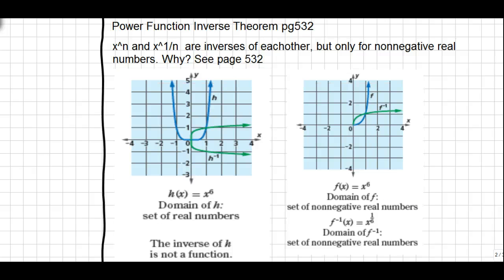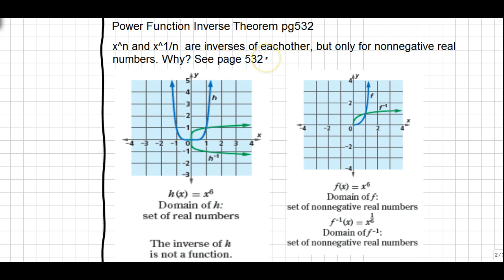One final item is the power function inverse theorem. When working with x to a power n and x to the inverse power 1/n, they are inverses of each other, but only for non-negative real numbers. Visually: if you have a parabolic power function with an even exponent and reflect it over y = x, the resulting inverse graph fails the vertical line test. By restricting the power function to quadrant one (positive numbers only), the reflected inverse does pass the vertical line test and is indeed a function. You can read more on page 532.